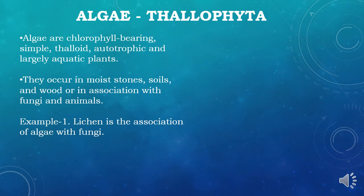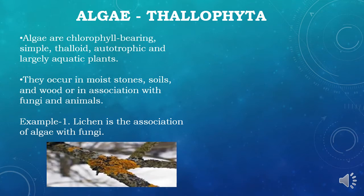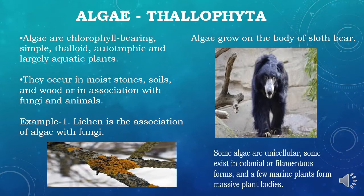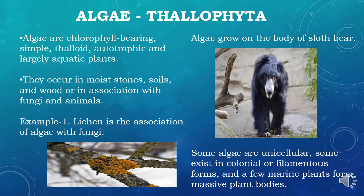Lichens are the symbiotic association of algae and fungi — algae occurring symbiotic with fungi is one example. Algae can also grow on the body of the sloth bear, showing a symbiotic relationship with animals. Some algae are unicellular; some exist in colonial or filamentous forms, and a few marine plants form massive plant bodies covering whole water bodies. Example of filamentous algae is Spirogyra.